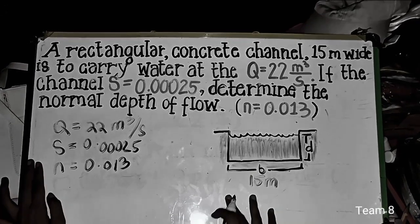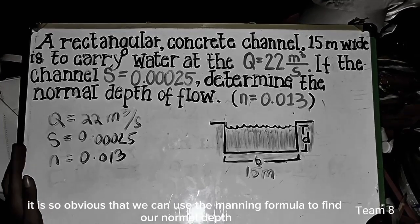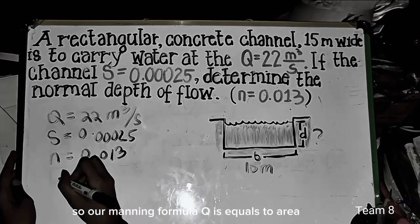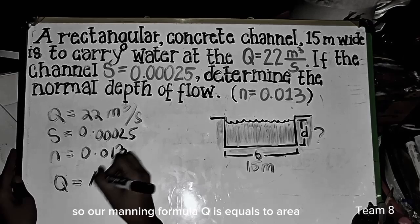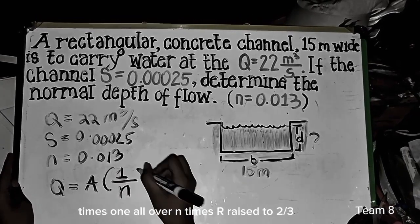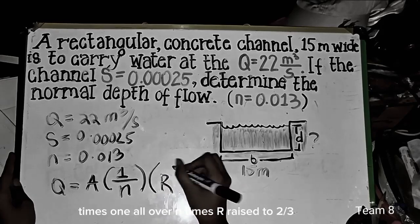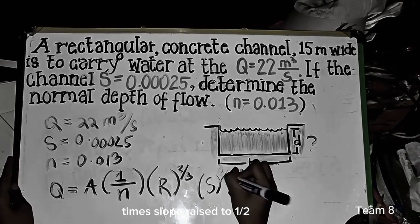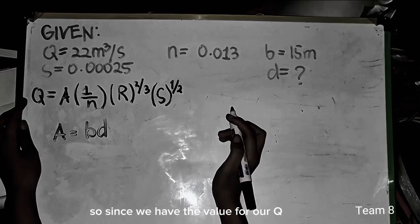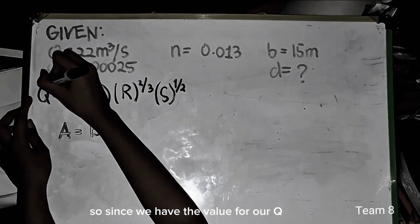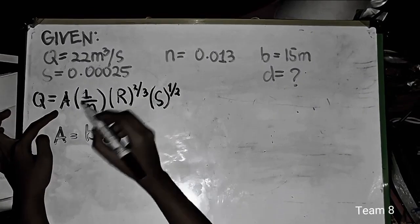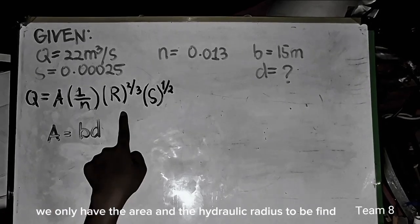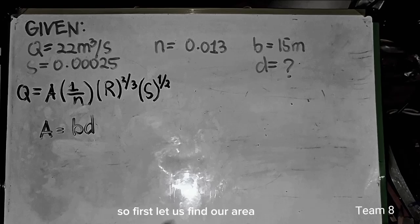Now, in this given, it is so obvious that we can use the Manning formula to find our normal depth. So our Manning formula is Q equals area times 1 all over N times R raised to 2/3 times slope raised to 1/2. So since we have the value for our Q and our N and our S, we only have the area and the hydraulic radius to be found. So first, let us find our area.